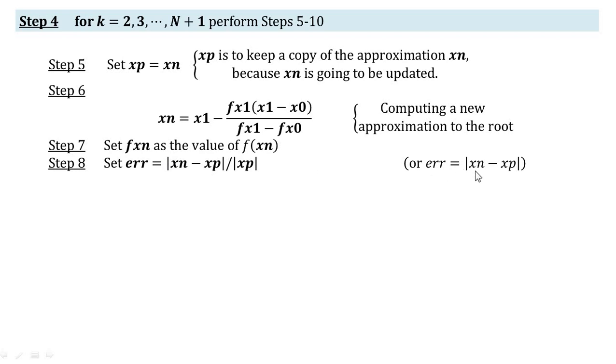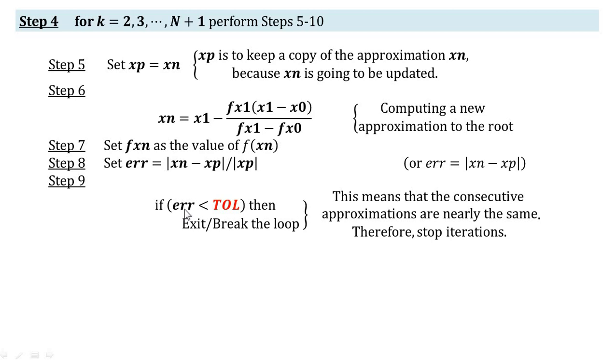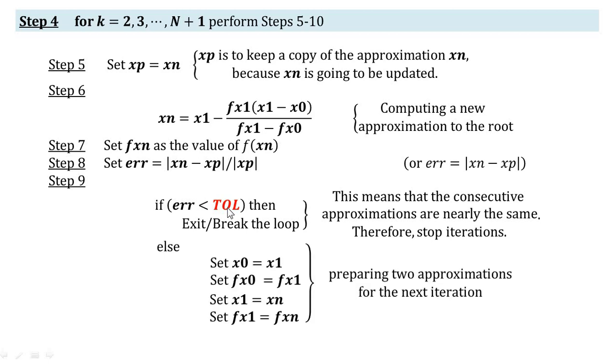relative error or we can choose absolute error formula for computing the error. We will compare the error with the tolerance. If error is less than tolerance we terminate the loop, we will stop the iteration. Otherwise we need to move to the next iteration. For this we will prepare two approximations for the next iteration. In this way we will copy x1, f(x1) into x0, f(x0) and xn, f(xn) into x1 and f(x1). So we have prepared for the next iteration.